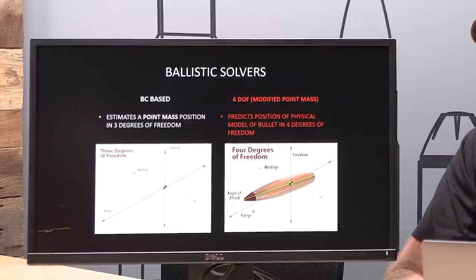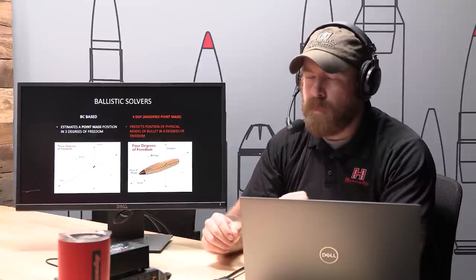You can't have angle of attack without having a bullet in there. There are all kinds of intricacies about the bullet that are required to do that angle of attack calculation. At a baseline level, the difference between the Hornady Fordhoff and BC-based programs is that Fordhoff has a bullet in it, and it's predicting the angle of that bullet relative to its flight path — and not just a generic bullet, but the specific bullet you are actually shooting.